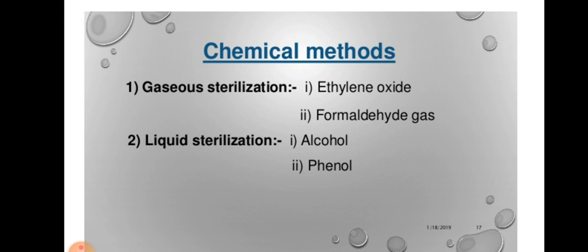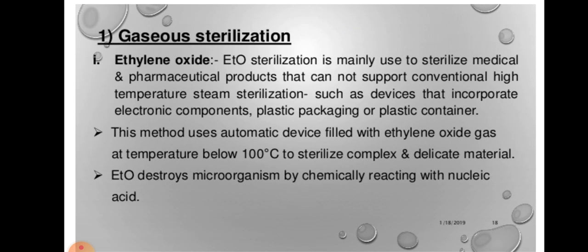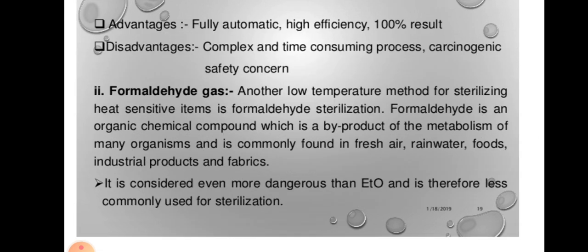Ethylene oxide sterilization is mainly used to sterilize medical and pharmaceutical products that cannot support conventional high temperature steam sterilization, such as devices that incorporate electronic components, plastic packaging or plastic containers. This method uses an automatic device filled with ethylene oxide gas at temperature below 100 degrees centigrade to sterilize complex and delicate materials. Ethylene oxide destroys microorganisms by chemically reacting with nucleic acids. Advantages: it is fully automated, highly efficient, 100% result is obtained. Disadvantages: it is a complex and time-consuming process and is also carcinogenic.